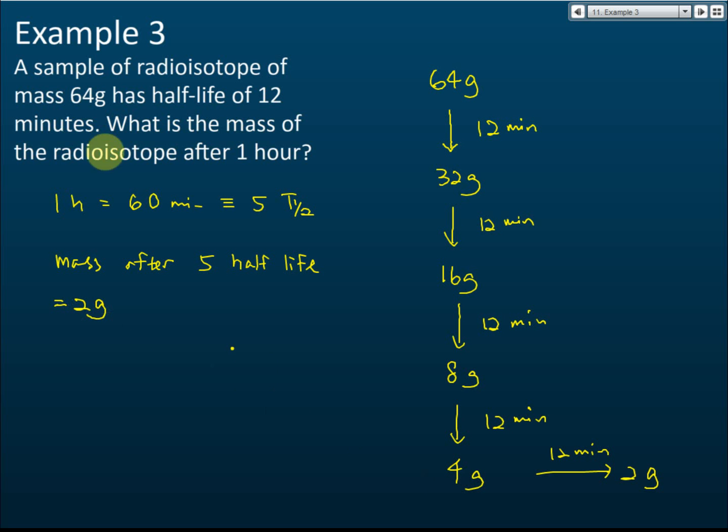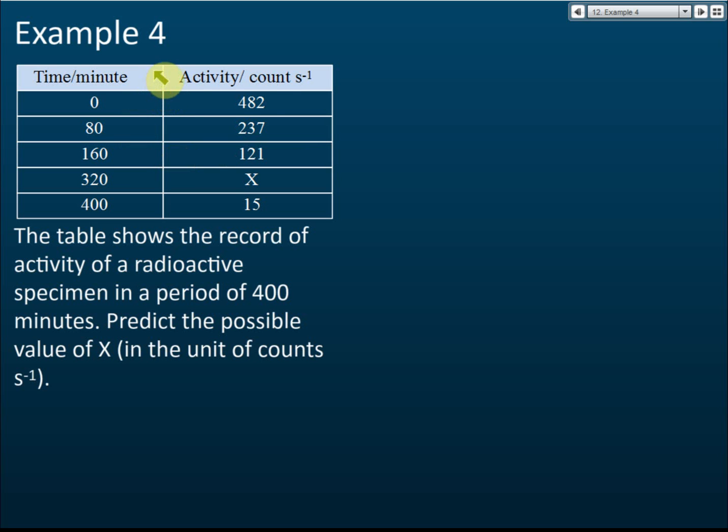The answer is 2 grams, because one hour or 60 minutes is equivalent to 5 half-lives. After 5 half-lives—one, two, three, four, five—the mass becomes 2 grams.